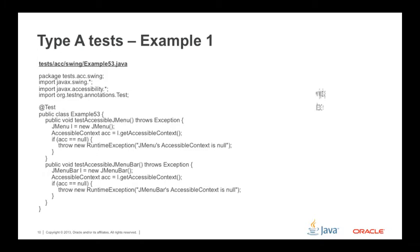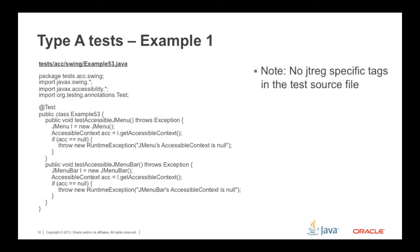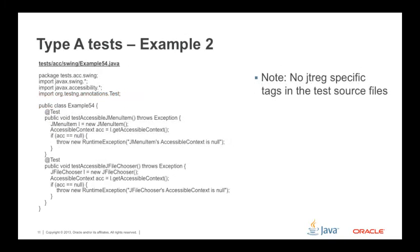Note that there are no JTREG-specific tags in the test source file. The test has only artifacts related to TestNG. Example 2 is the same as Example 1, except that @Test annotations are added at the method level instead of the class level.